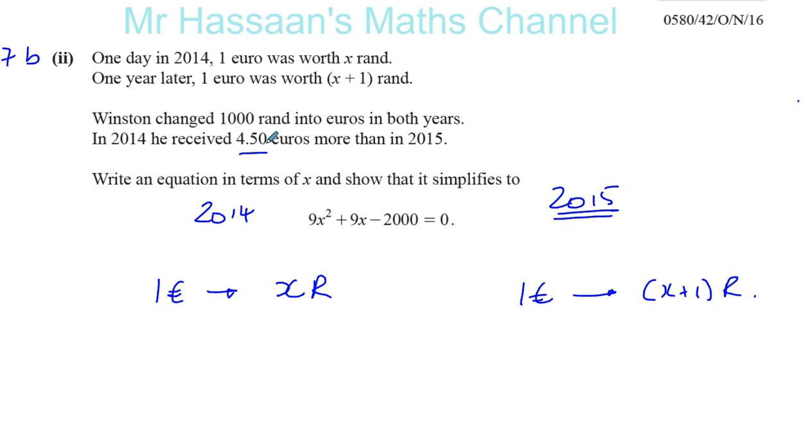So he changed 1,000 rand. So I'm not going to use x again because we already have an x here. I'm going to put y rand. And he received a certain number of euros. So y rand became a certain number of euros. Let's say 1,000 rand. Sorry. What am I talking about? He changed 1,000 rand and he got a certain number of euros. So he changed 1,000 rand and he got y euros.